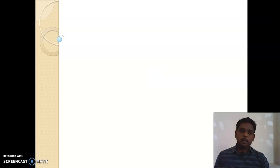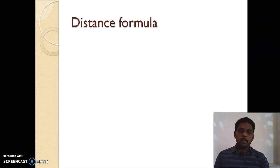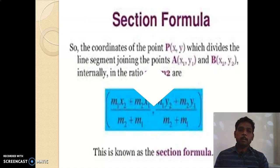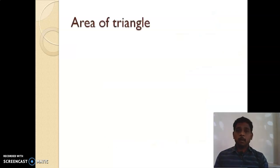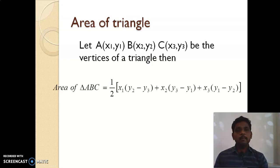Before going further, let us recall the basic formulas. In coordinate geometry, the first one is the distance formula. The application of the distance formula is to find the distance between any two points in the coordinate plane. Next is the section formula — its application is to find the coordinate point which divides a given line segment in a given ratio. Then next is the area of the triangle: if three vertices are given, we can find the area using the formula.